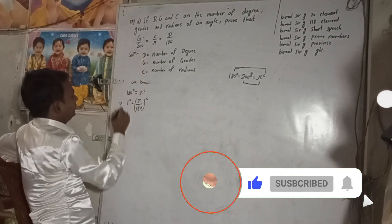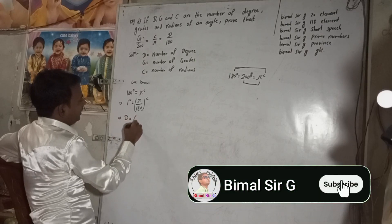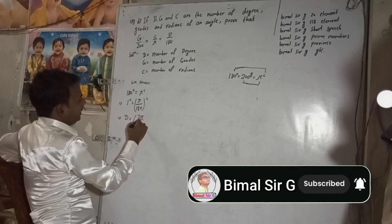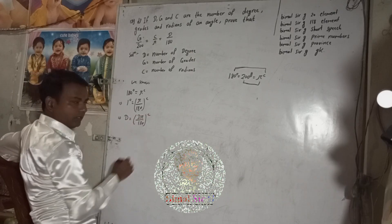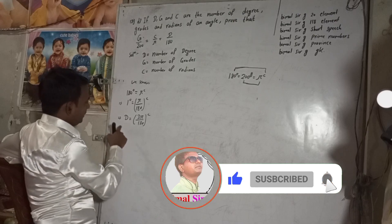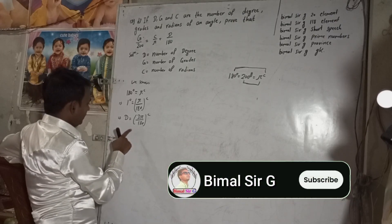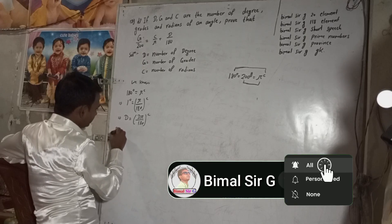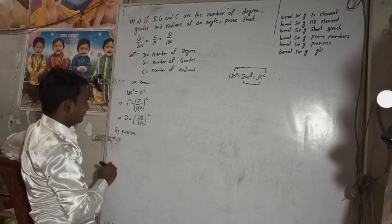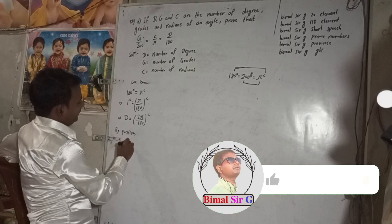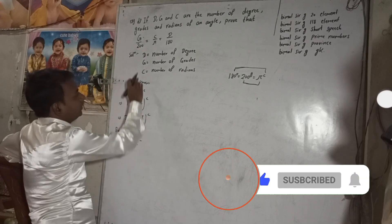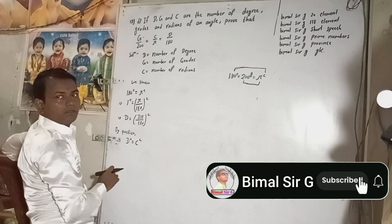That means for D degrees: D degrees is equal to D times Pi by 180 radians. Now from the question, by the given condition, D degrees is equal to C radians.